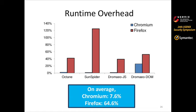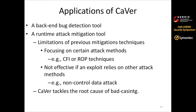Regarding runtime overhead, CAVER's overheads depend on the application characteristics. On average, on Chromium we have 7.6% overhead, and on Firefox we have 64.6% overhead. CAVER can be used as a backend bug detection tool — as demonstrated by finding 11 different vulnerabilities. In an enterprise setting with a backend server running CAVER, it can hopefully find more bugs in the future.